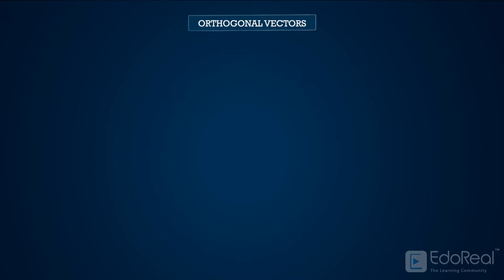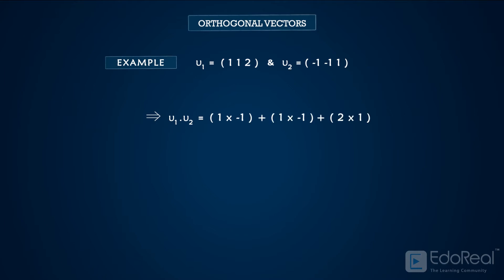Let us now discuss an example. Find if the vectors U1 and U2 are orthogonal vectors or not. To find the dot product of the two vectors U1 and U2, let us multiply the corresponding elements of the two vectors and add the products. We get the dot product as zero. So we can say that the two vectors are orthogonal vectors.